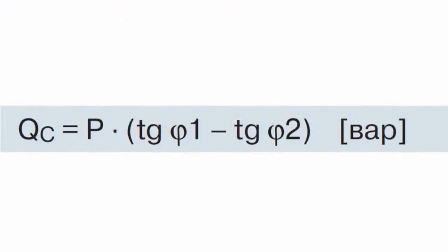The reverse magnetic energy returned to the supply grid can be temporarily stored in capacitors and then used for further alternation of the magnetic field. To select the right capacitor, the required reactive power Qc can be calculated using the following formula: Qc equals total power multiplied by the difference of tangents of angles phi1 and phi2.